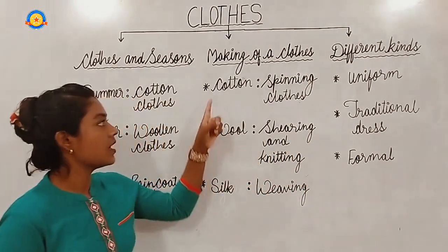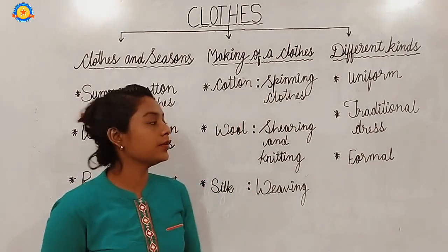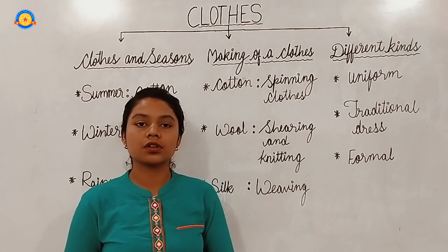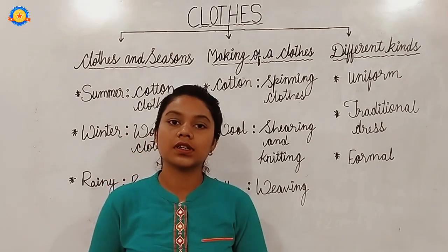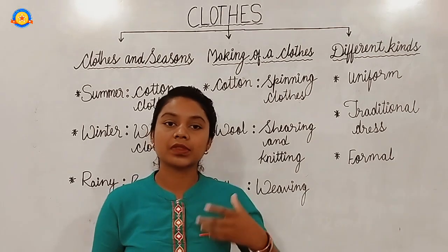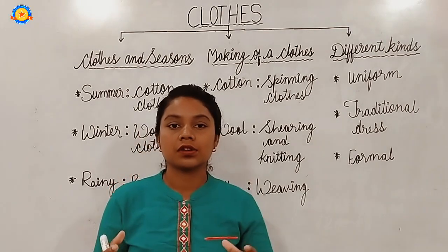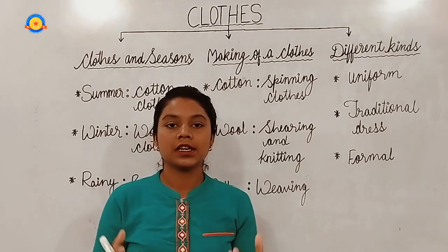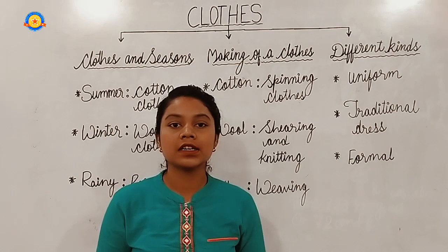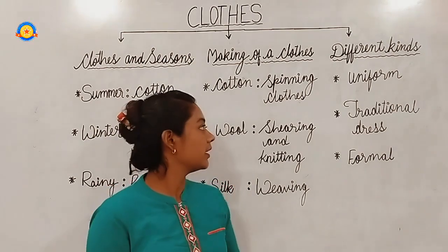Next, we have how do we make clothes — the making of clothes. This cotton clothes, how do we make them? We get cotton from the cotton plant. From the cotton plant, it is made into cotton thread. This process is called spinning.